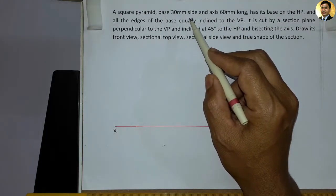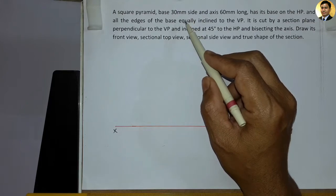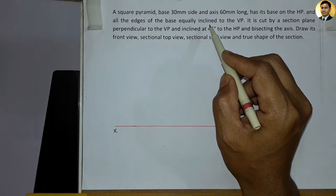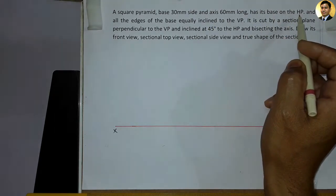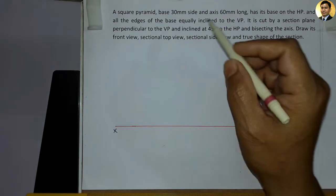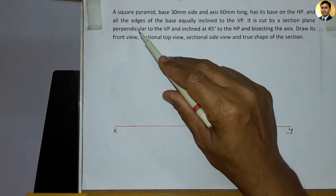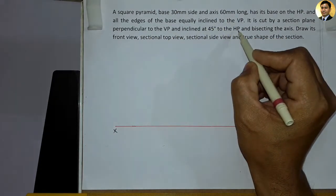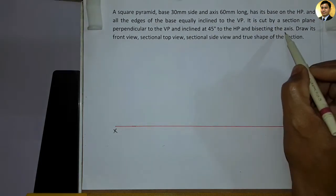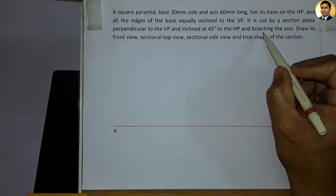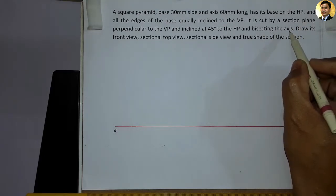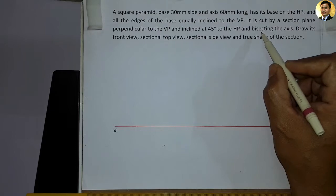Square pyramid ke jo 4 edge of base hain, woh 4 edges vertical plane ke saath ek saman angle bana kar rest ho rahe hain. Yeh pyramid horizontal plane per rest ho raha hai. Yeh sectional plane, yeh pyramid ki axis ke do equal division per raha hai.